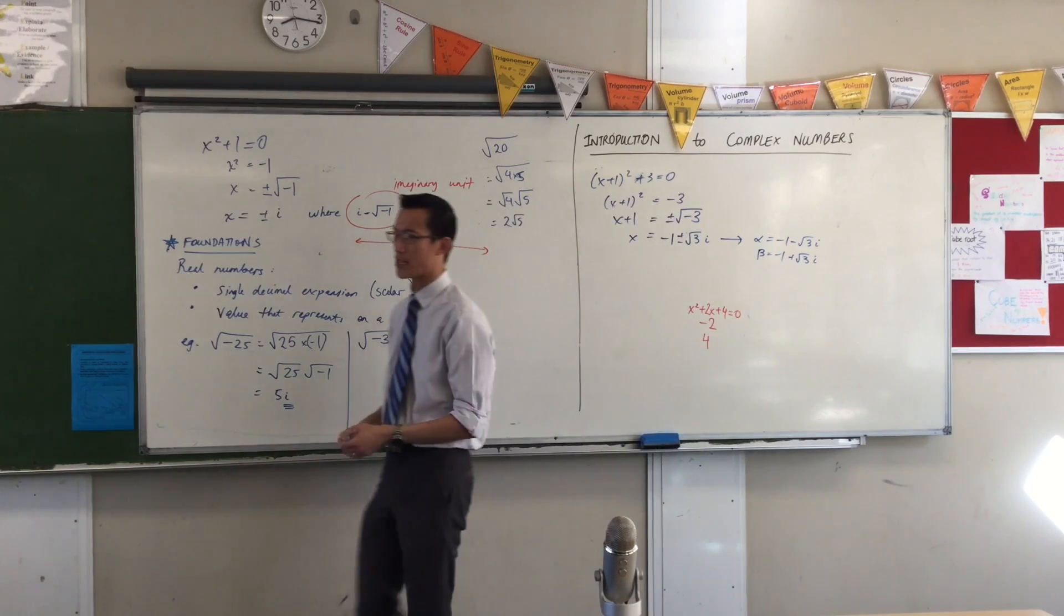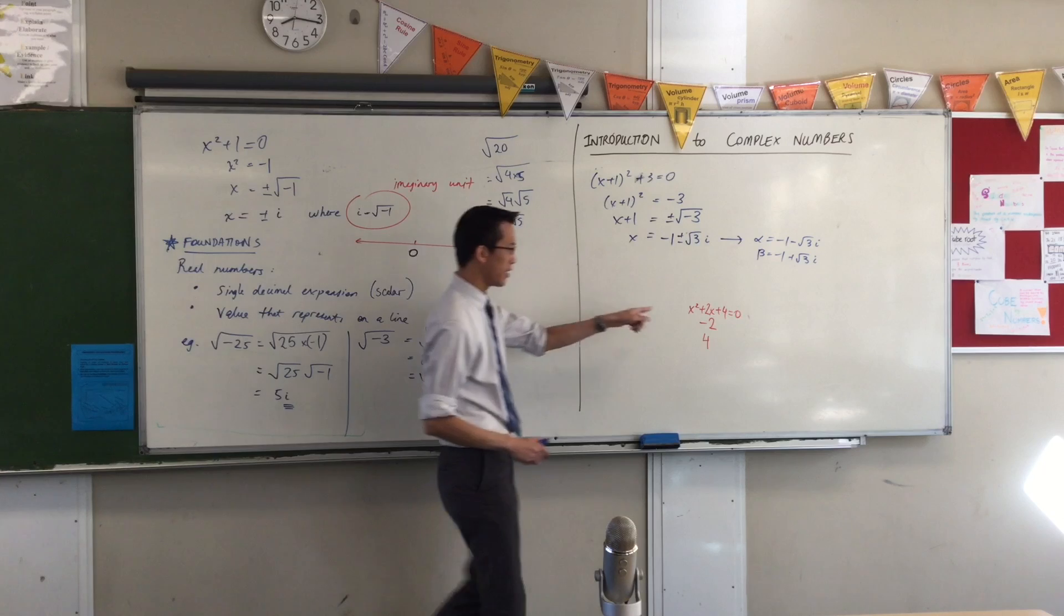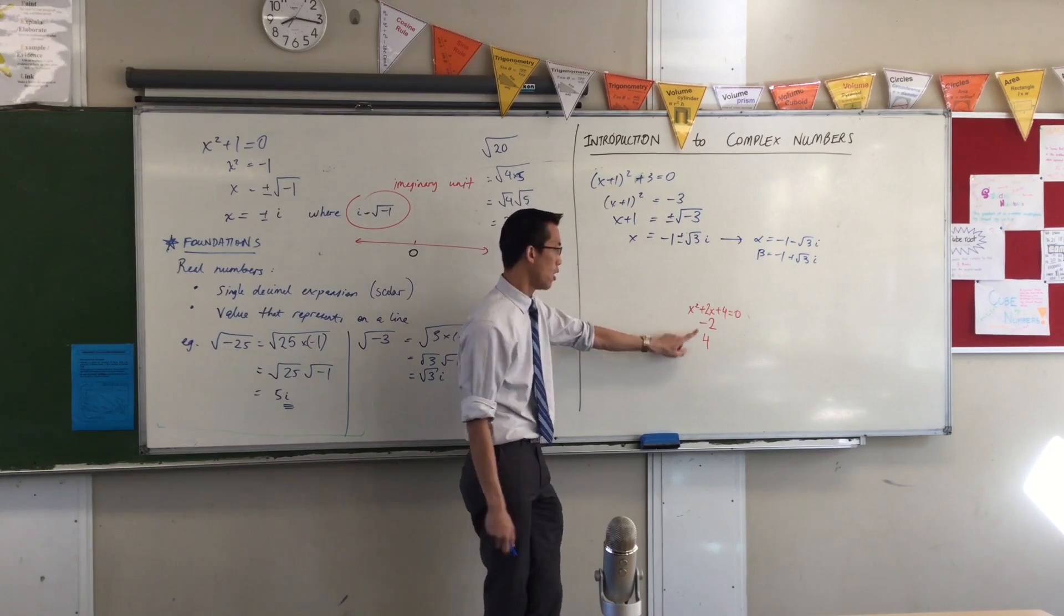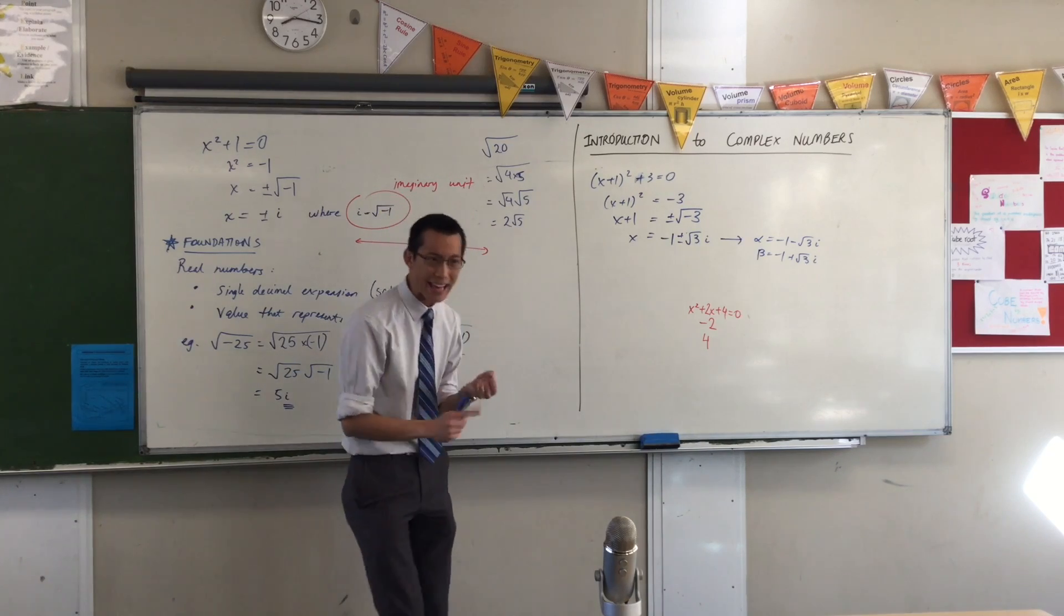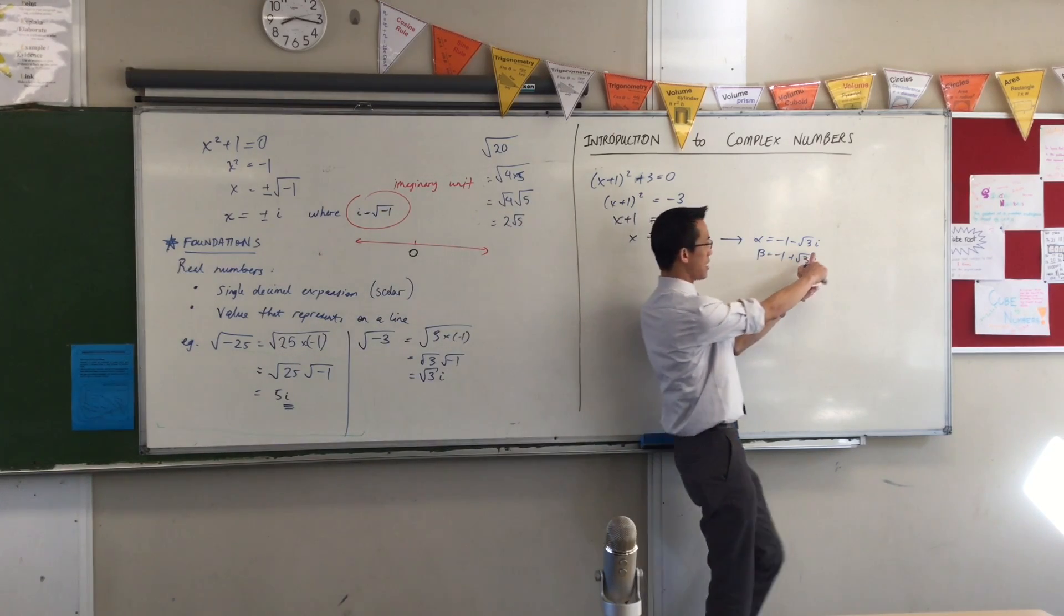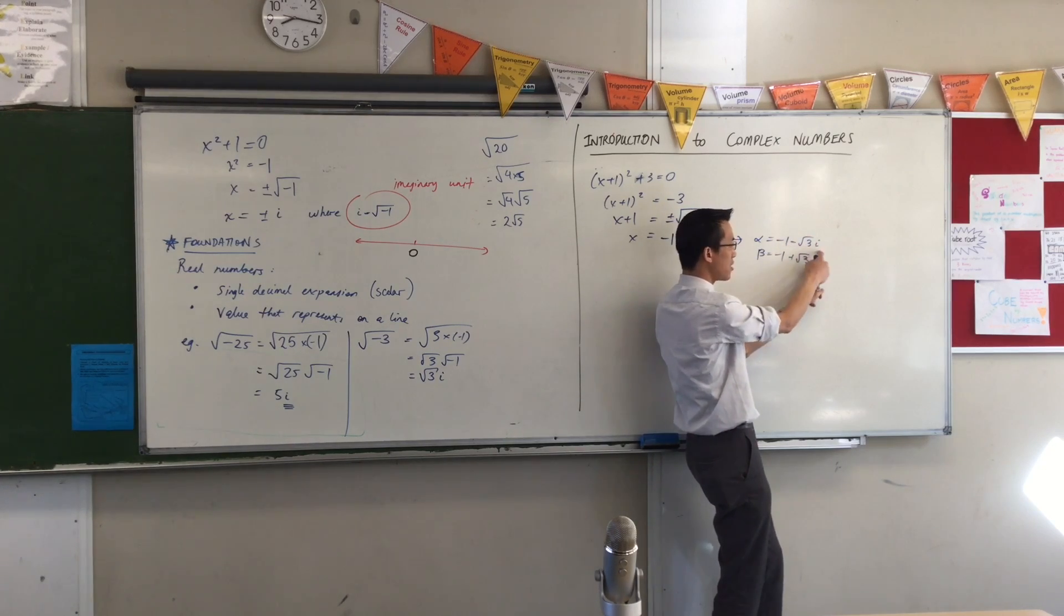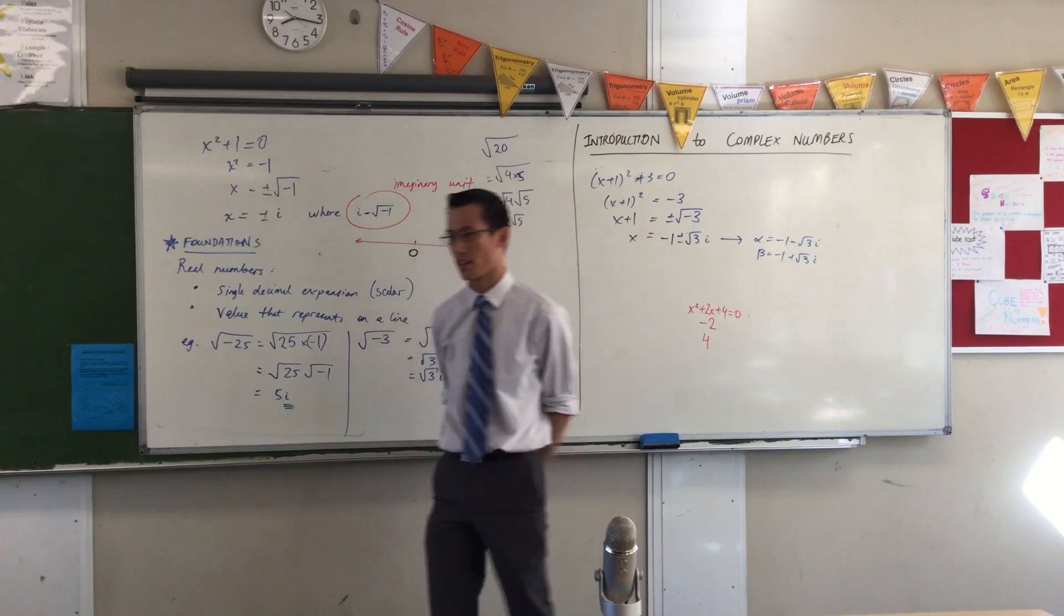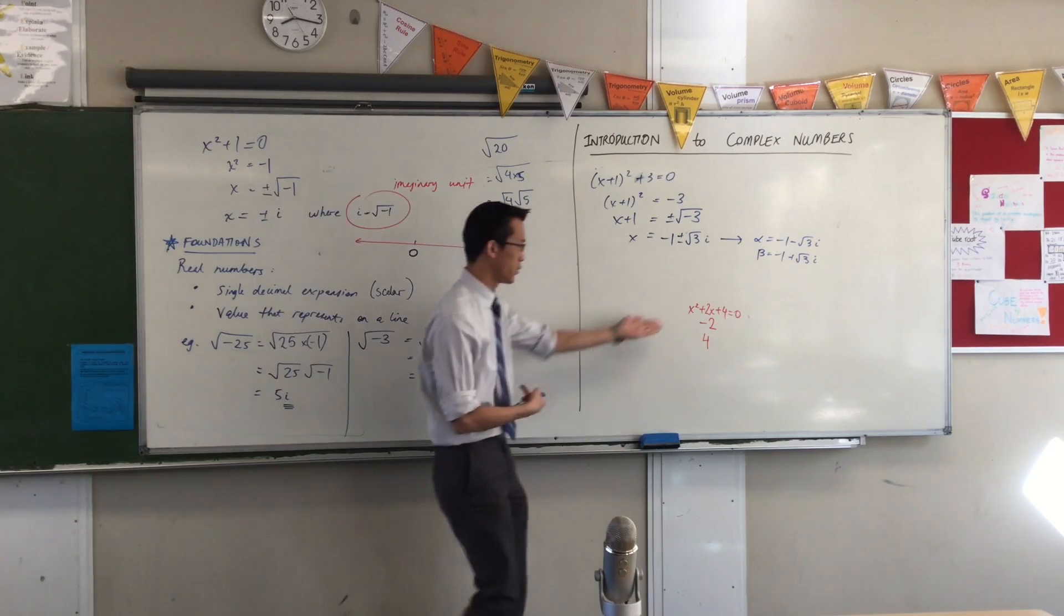Now look, does this make sense of what we've seen before? We said that the sum of the roots was negative two and the product of the roots is four. Well look at the sum. Clearly the sum works, doesn't it? Because if you add α and β together, look at these guys over here. You know this imaginary bit? Well there's a negative imaginary bit, a positive imaginary bit and when you add they just cancel each other out. That just leaves you with the negative ones and you've got two of them. So negative two.